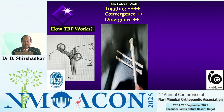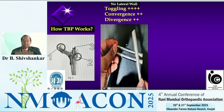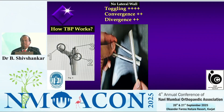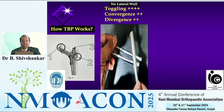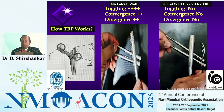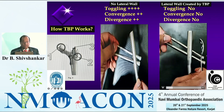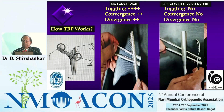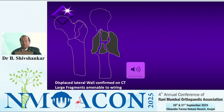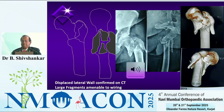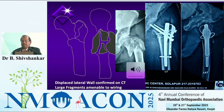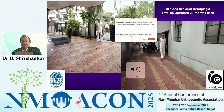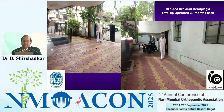This is Dr. Ganjale's trochanter buttress plate. If there is no lateral wall, the screw can diverge, toggle, and converge — you can see the screws are converging, toggling, and diverging. But if you use a trochanter buttress plate, the screws cannot toggle or diverge — the instability in the screw is greatly reduced. For larger fragments especially in younger patients I still prefer to use a plate. I used both wire and plate in one of my own cases and the patient went on to unite with a beautiful result.